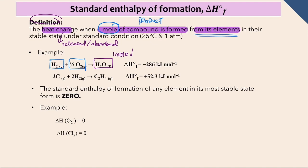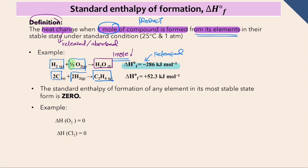We need to balance the equation so that only one mole of product is formed. Looking at delta H_f^0 for water, the value of delta H is negative, meaning the heat is released during this reaction. Next, for formation of C2H4, the most stable elements to form C2H4 are carbon and hydrogen. Balance the equation with the condition that only one mole of product is formed. The value of delta H for C2H4 is positive, meaning the energy is absorbed during the reaction.